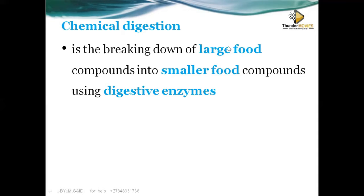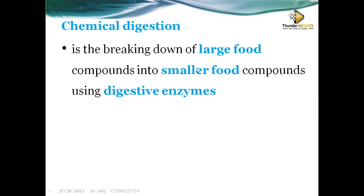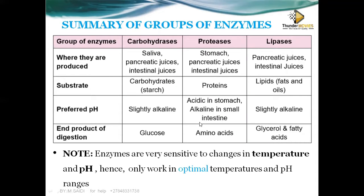When we say large food particles in chemical digestion, they may not be visually large, but they are large compared to the nutrient particles that are absorbed into the bloodstream. Physical digestion breaks big particles into smaller ones, but those smaller particles are still large for chemical digestion to further break down into absorbable nutrients.